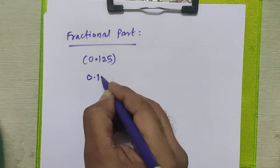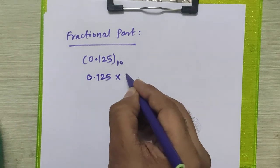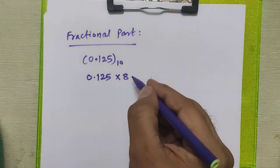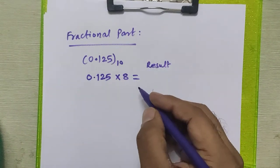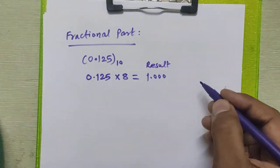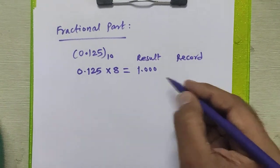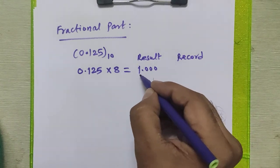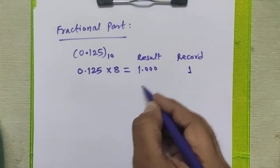We will multiply this fractional part by 8 in every step. We get some result here. So the result for this step is 1.000 and we are going to record the integral part from the result. The integral part is 1, so we will record 1 here and we will carry forward the fractional part for further multiplication.